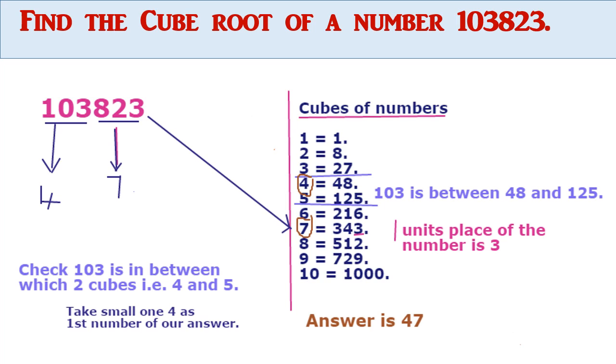For example, find the cube root of the number 103823. First, we divide this number into two parts: first part is 103 and second part is 823. Observe the units place, we find the number 3. In the cubes of numbers, 7 cubed is 343. The units digit is also 3. Therefore, the unit digit of our answer should be 7.